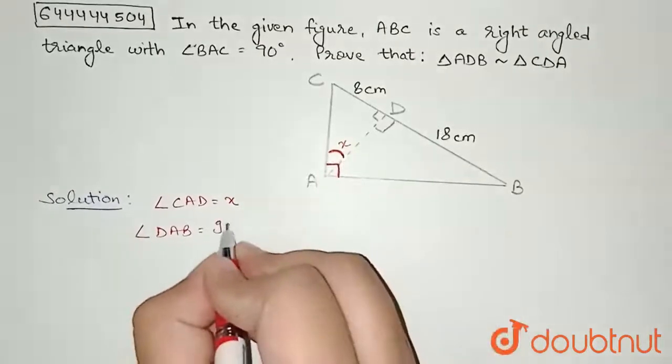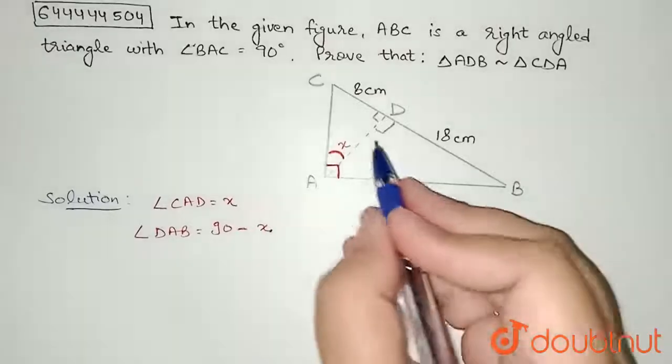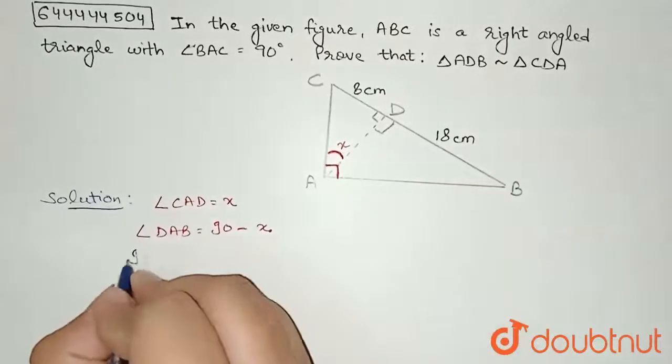Now if we see this triangle, in triangle DAB, we can find this measure of angle DBA.